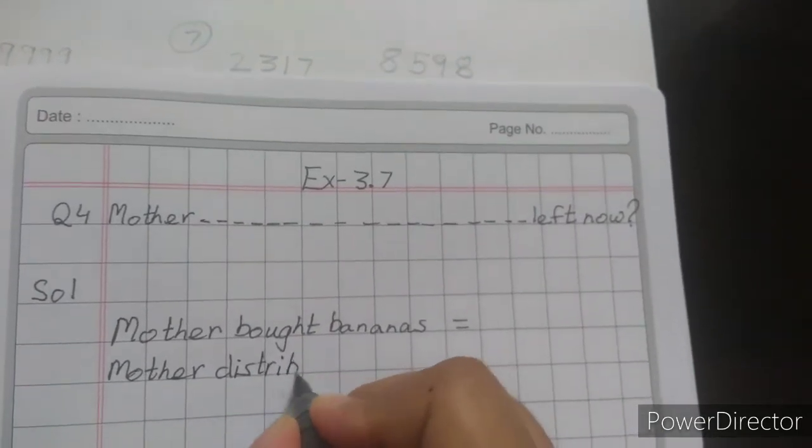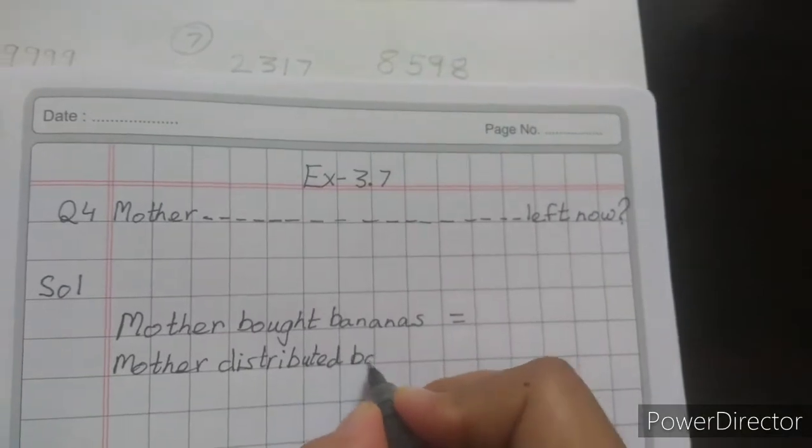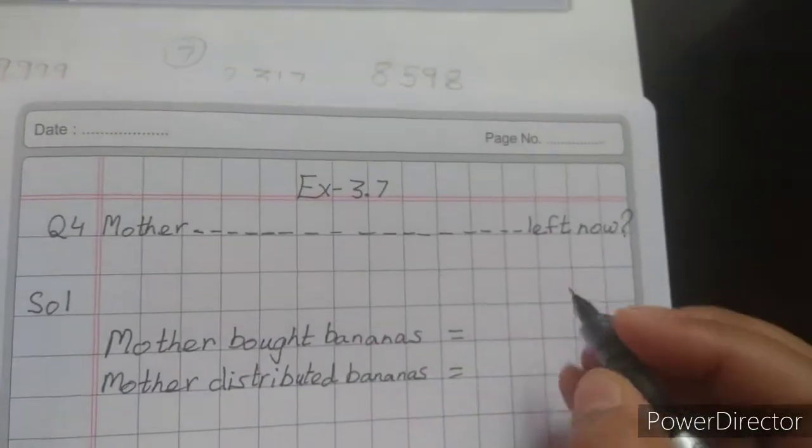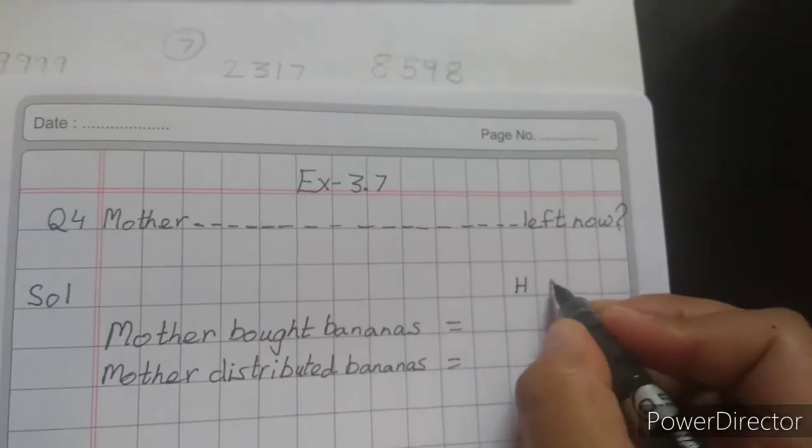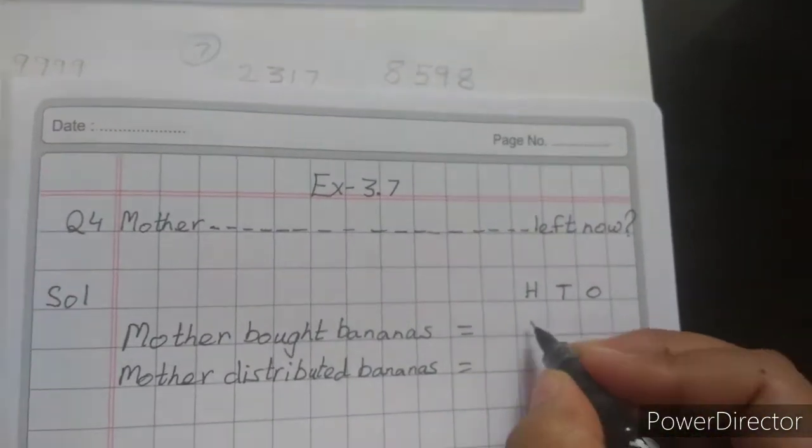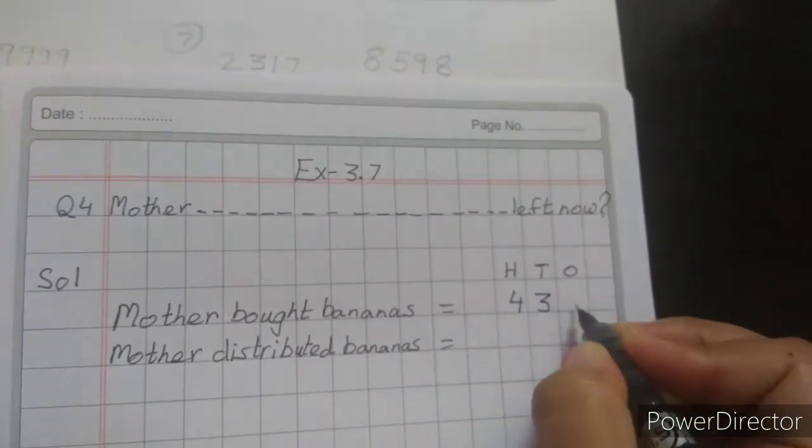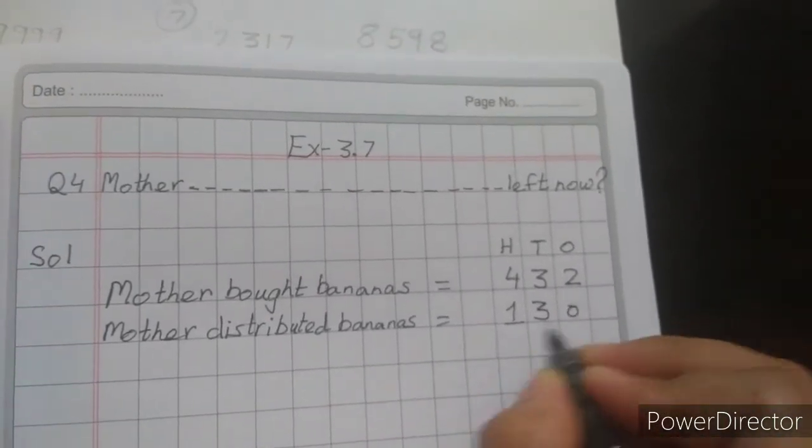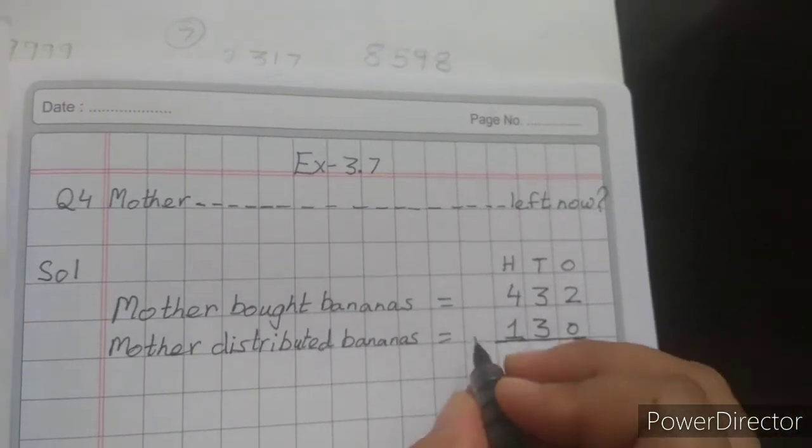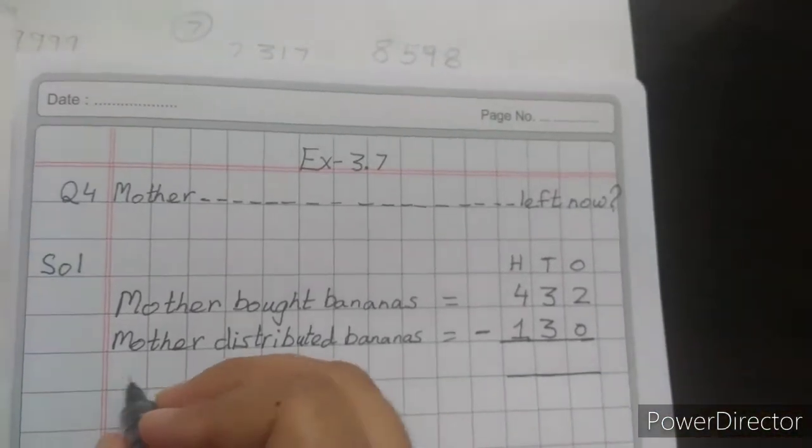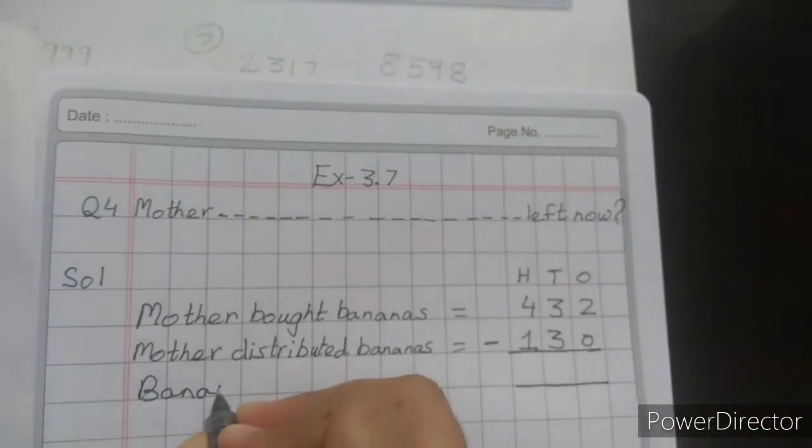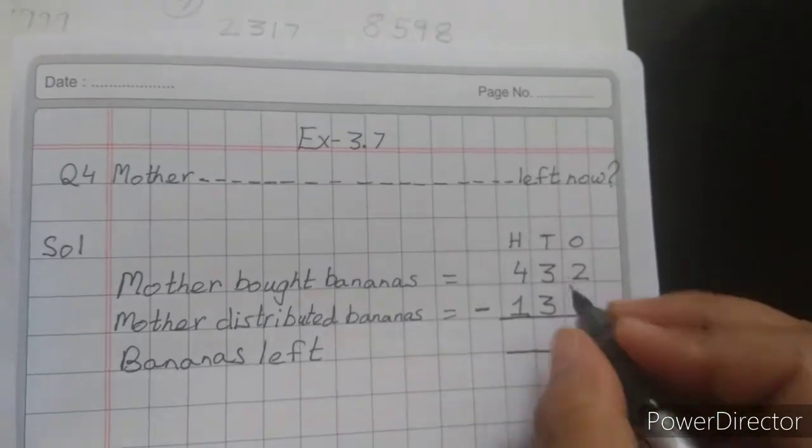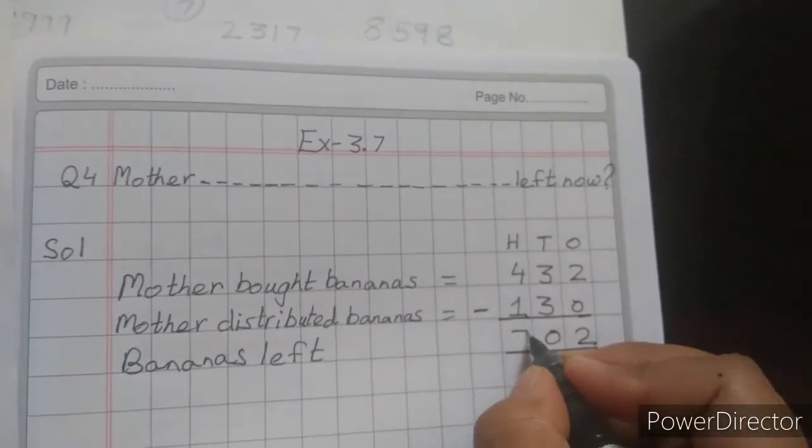Mother distributed bananas equals. Now in this column of hundreds, tens, and ones place value, we will put how many bananas mother bought: 432. How many did she distribute? 130 she has distributed. So first we have to find out how many are left. Left means subtraction, minus sign. We will write bananas left. Now 2 minus 0 is 2, 3 minus 3 is 0, 4 minus 1 is 3. So how many bananas left? 302.